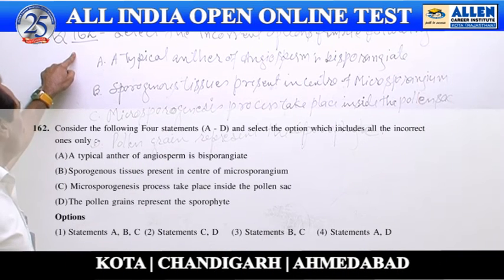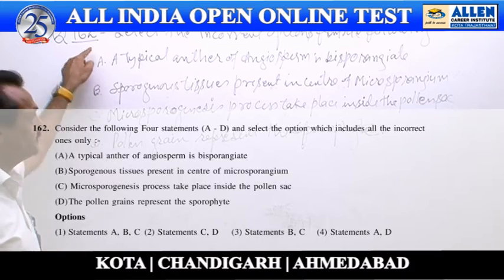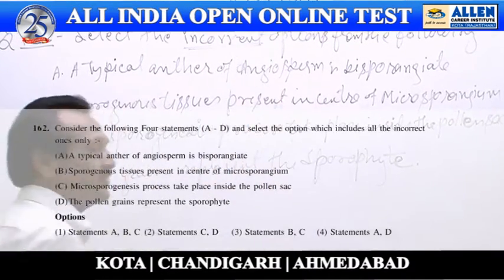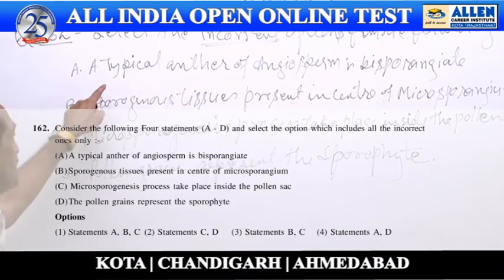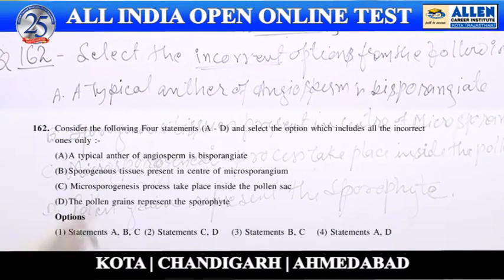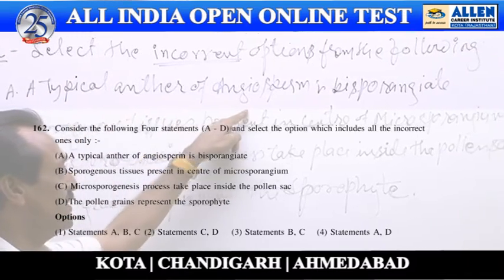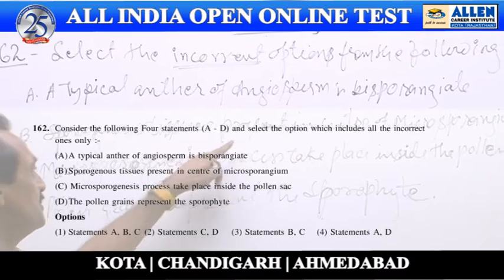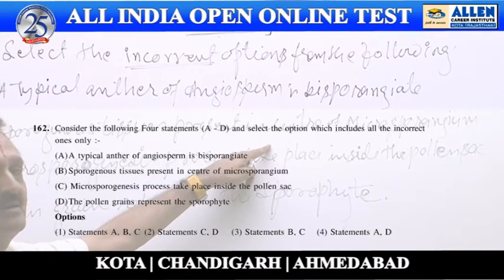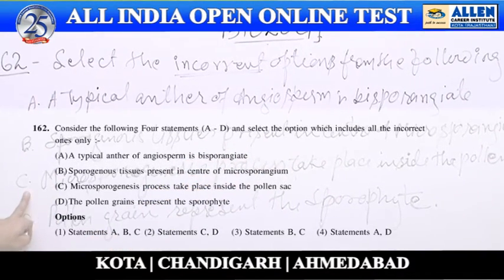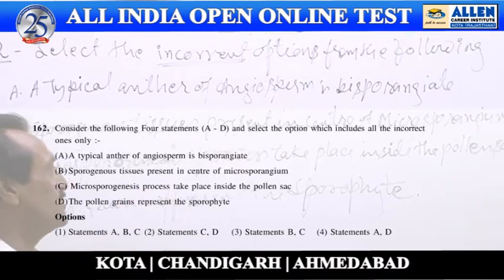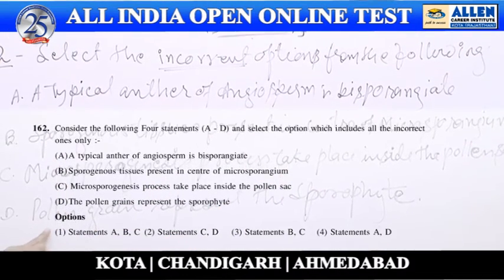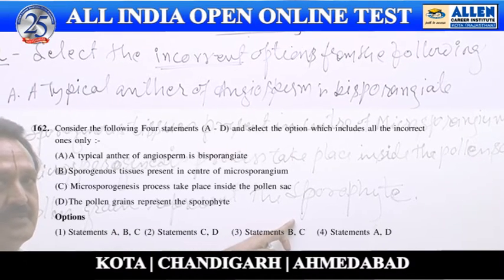Question number 162: select the incorrect options from the following statements. Statement one — a typical anther of angiosperm is bisporangia. Statement two — sporogenous tissues are present inside the microsporangia. Statement three — microsporogenesis process takes place inside the pollen sac. Statement four — pollen grains represent the gametophyte.